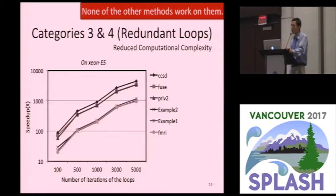This result shows the speed-ups we got using GLORY on these benchmarks that have categories 3 and 4 redundancies. It's worth noting that none of those previous methods can work on these benchmarks. They do not give any speed-ups. This chart shows that because these redundancy eliminations could reduce the computational complexity, the more iterations the loop has, we get more speed-ups. It ranges to thousands or hundreds of thousands of times. It's large. And then similarly, we did the same experiments on some other machines, and speed-ups trend is similar.